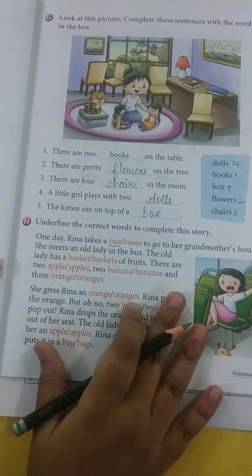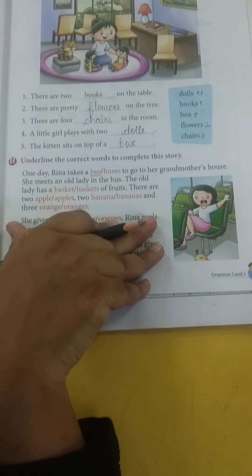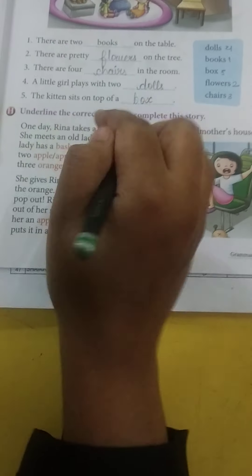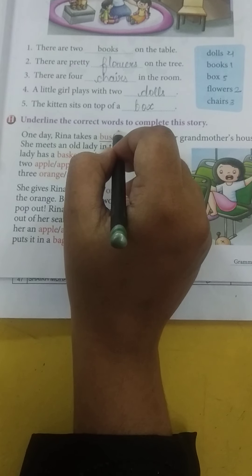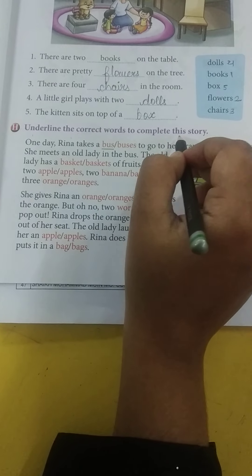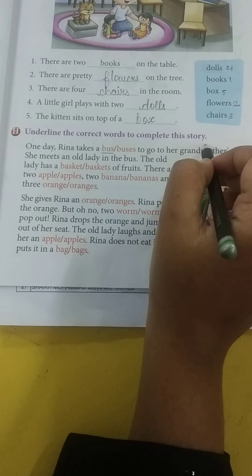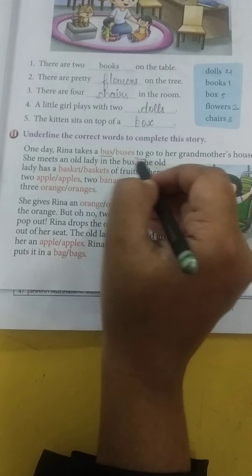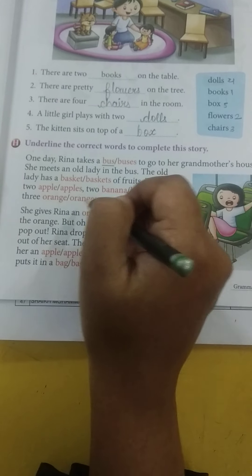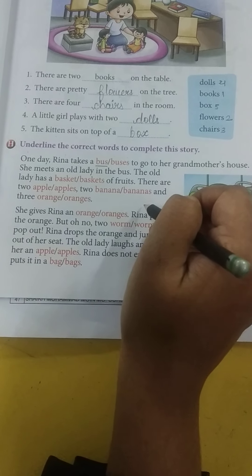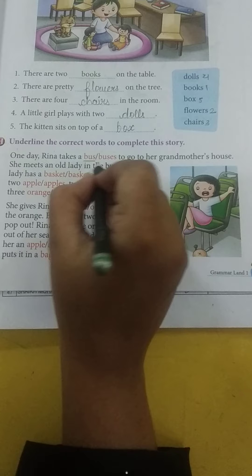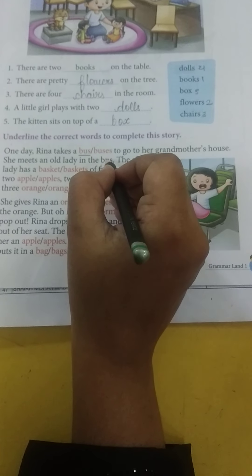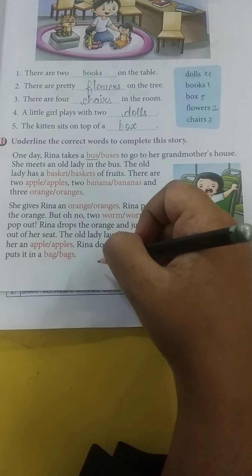Okay, now our next question is Question H. Underline the correct words to complete these stories. For each sentence, two words are given as options. We have to underline only the right word so that our story is complete.